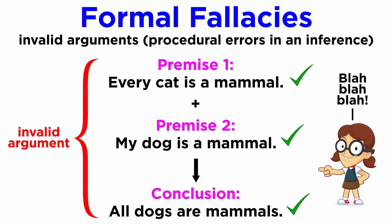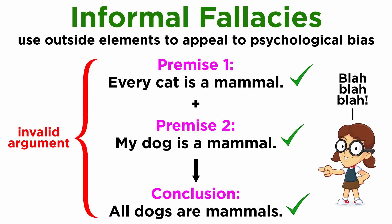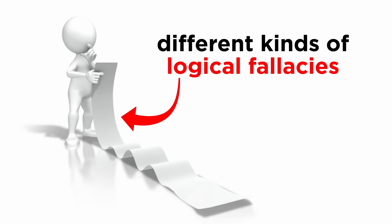You can embellish all you want with external reasons, eloquence, and other subterfuge, turning it into an informal fallacy, but it would still remain invalid. In the next tutorial, we'll dive into several examples of common fallacies, as well as how to identify and avoid them in order to improve your argumentation skills and ability to discern between good and bad reasoning.